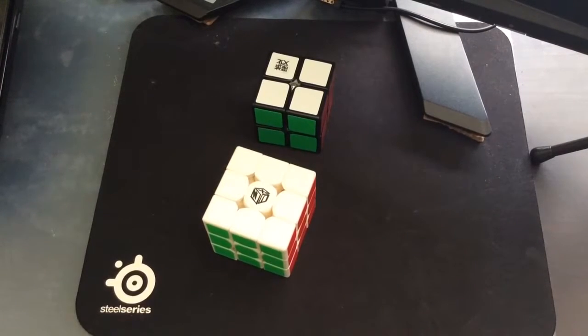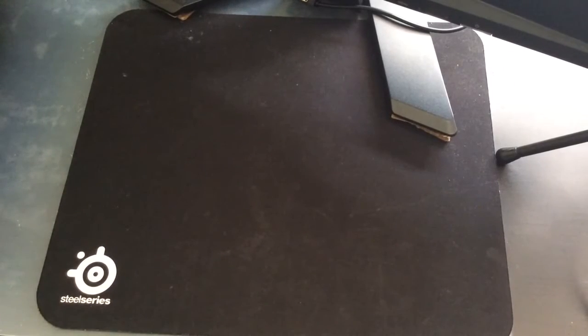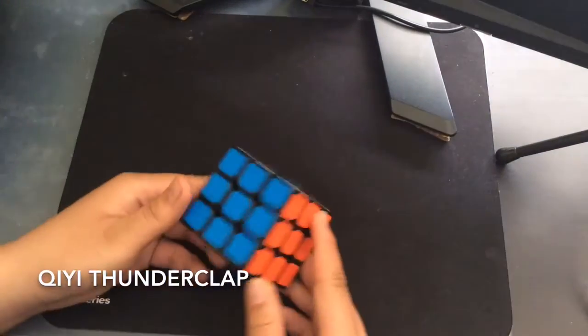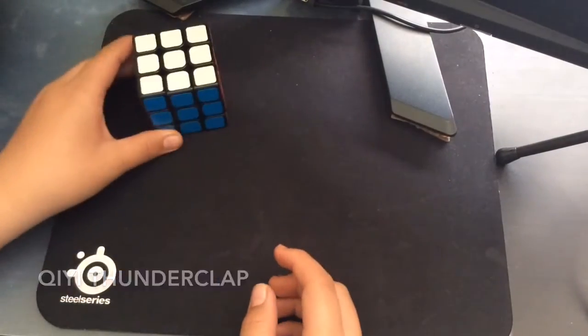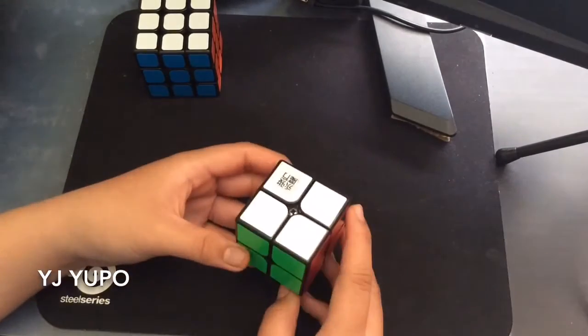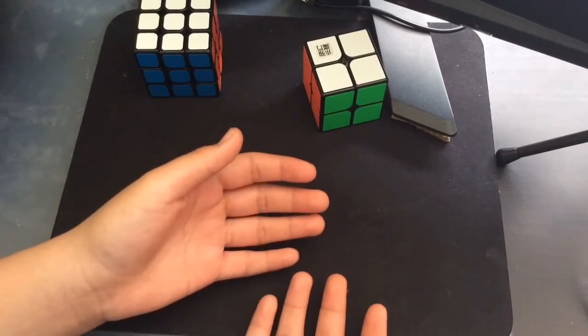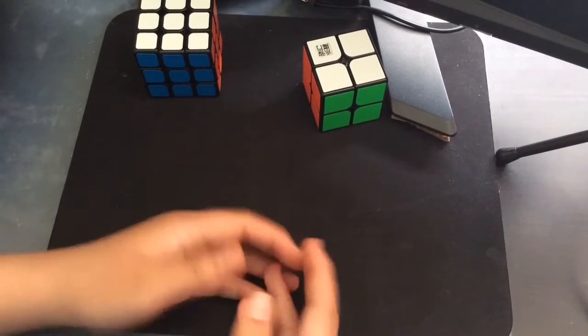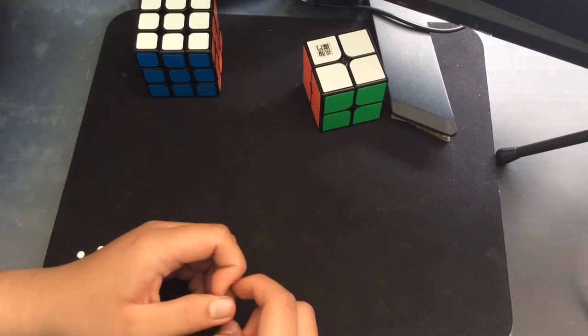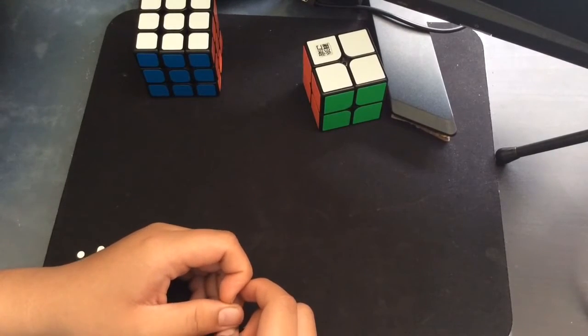So here goes Audrey. Hey guys, I'm going for three events: pyraminx, 3x3, and 2x2. For 3x3 I have the QiYi Thunderclap, which I have a video on. For 2x2 I am using the YJ Yupo, pretty cool. And for pyraminx, I don't have it yet, but it's going to be the MoYu pyraminx in black.